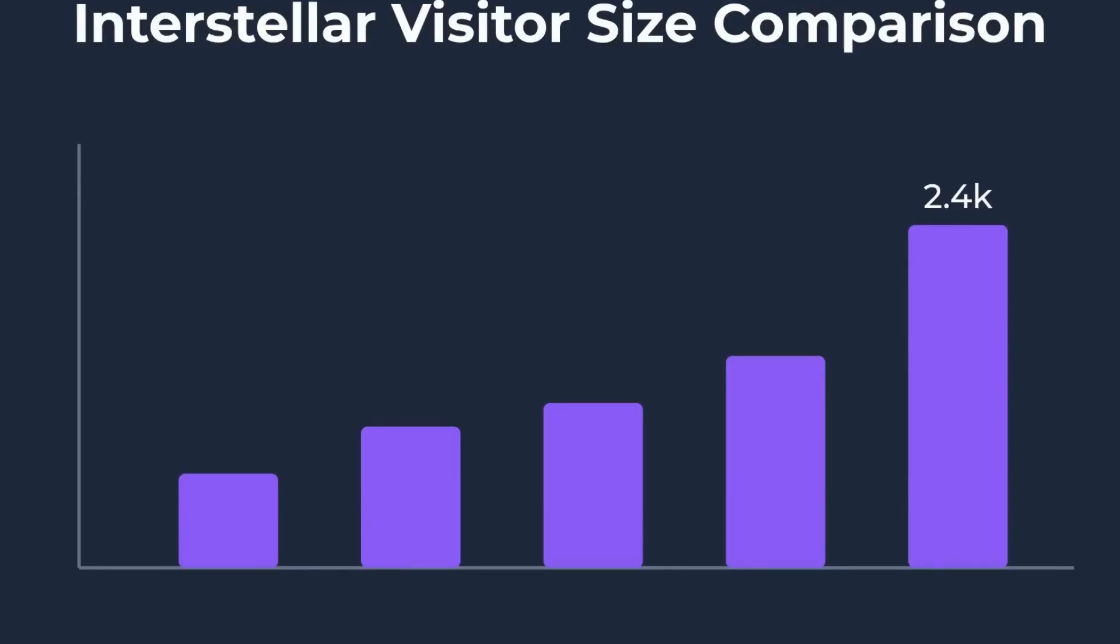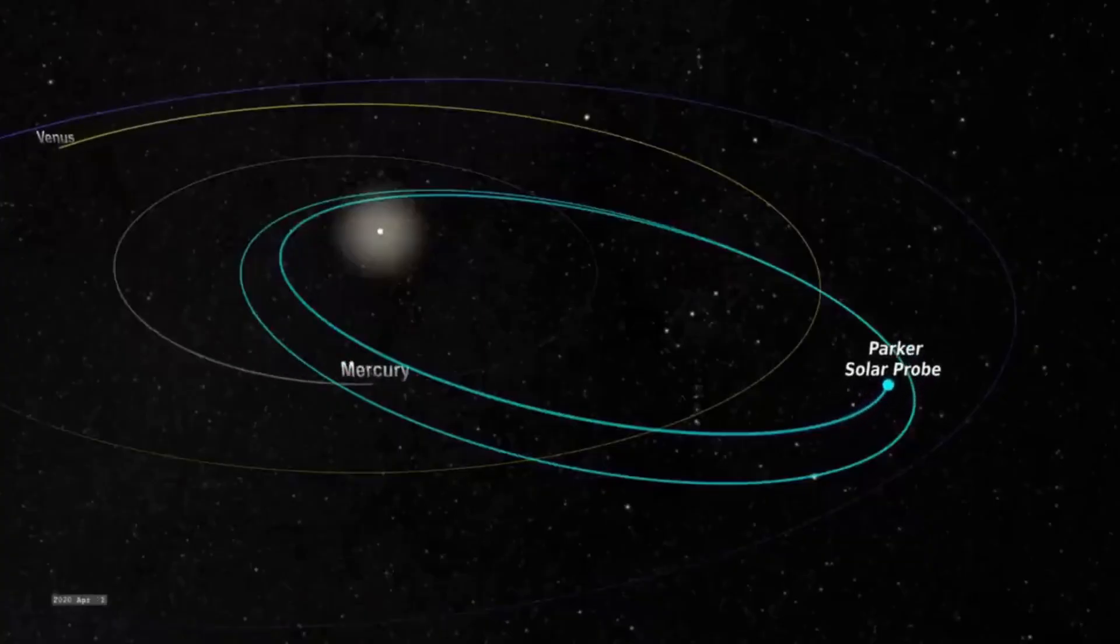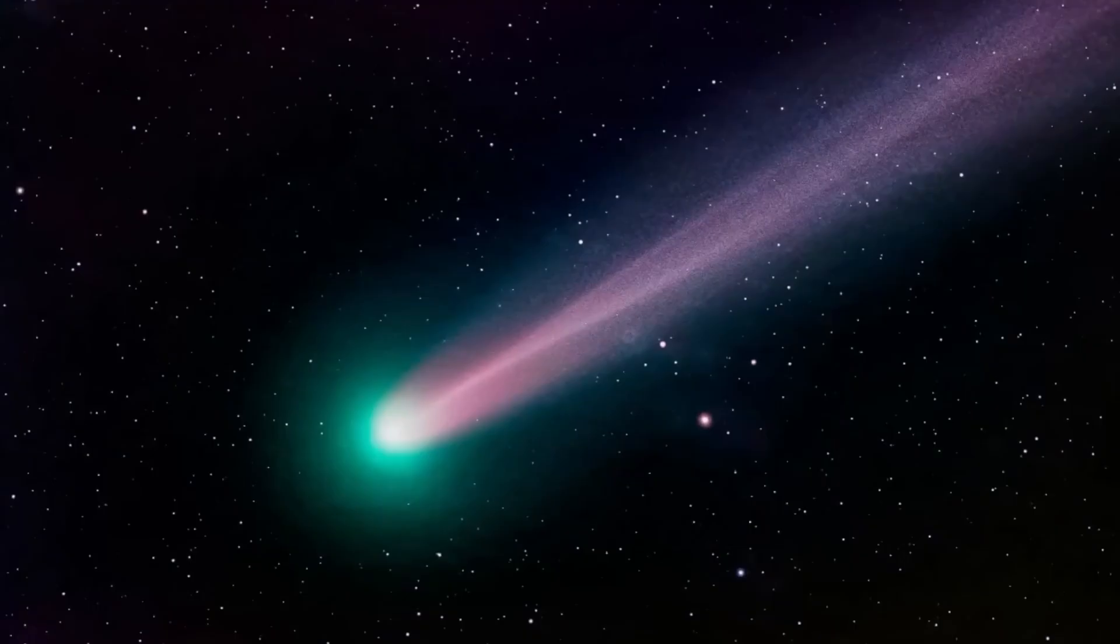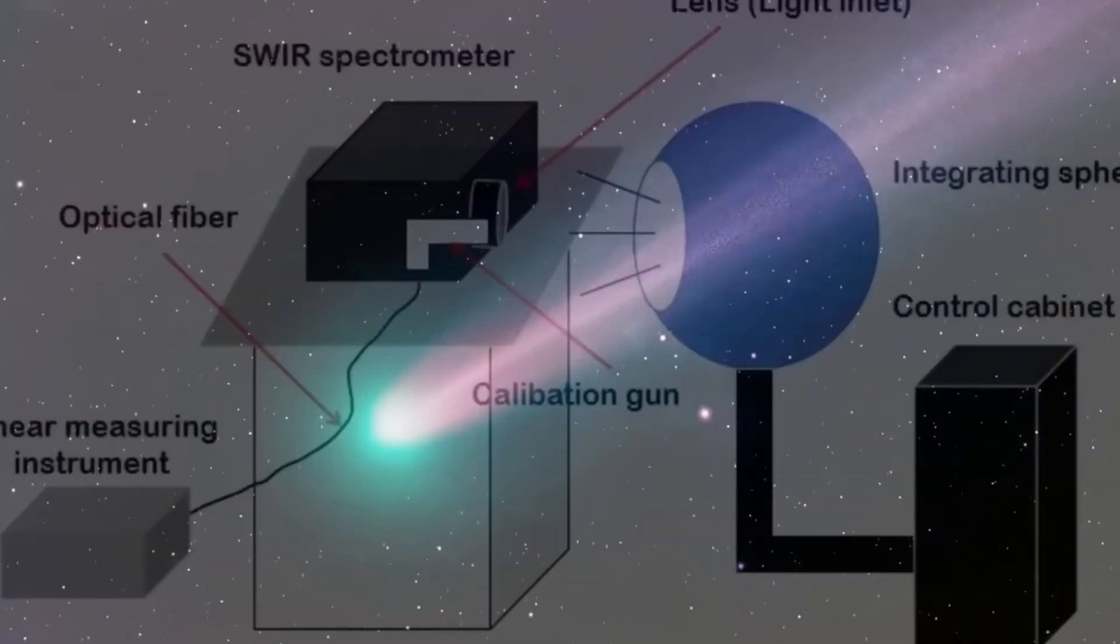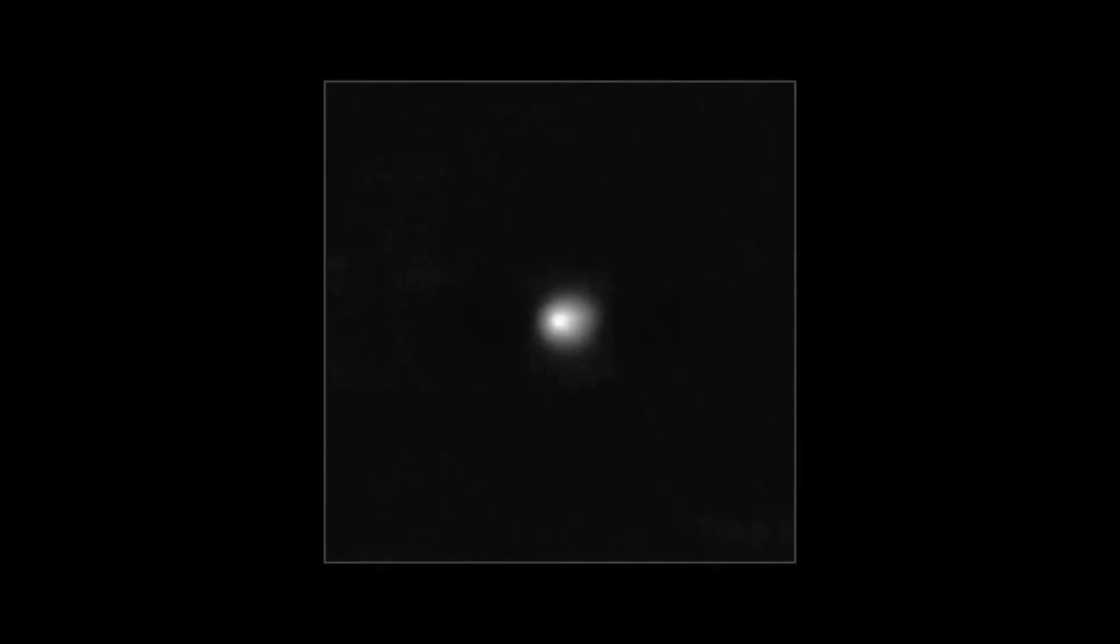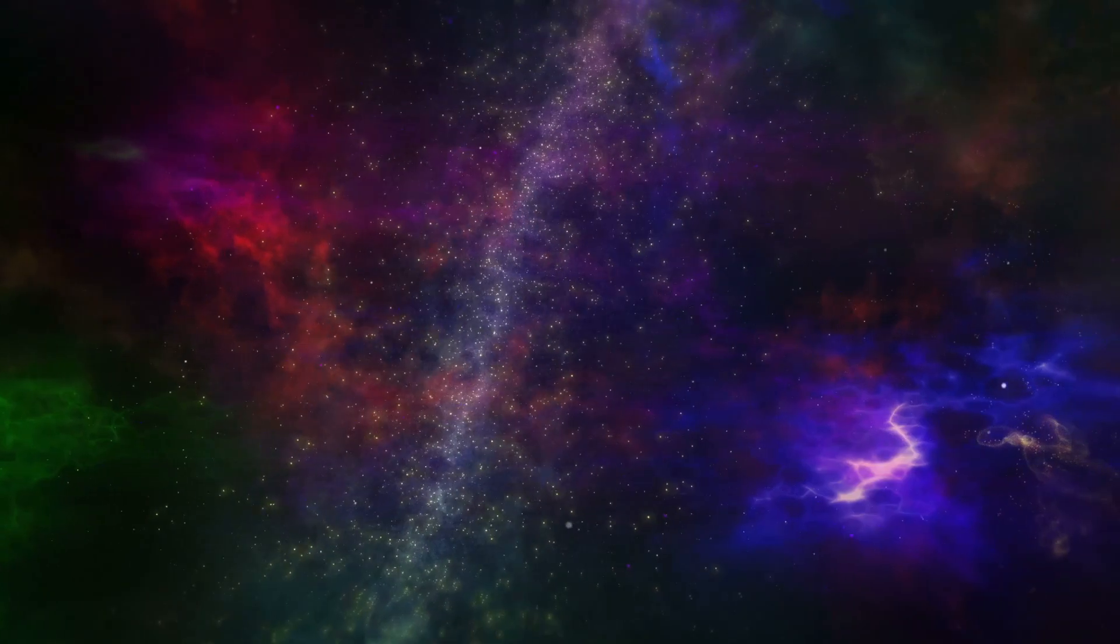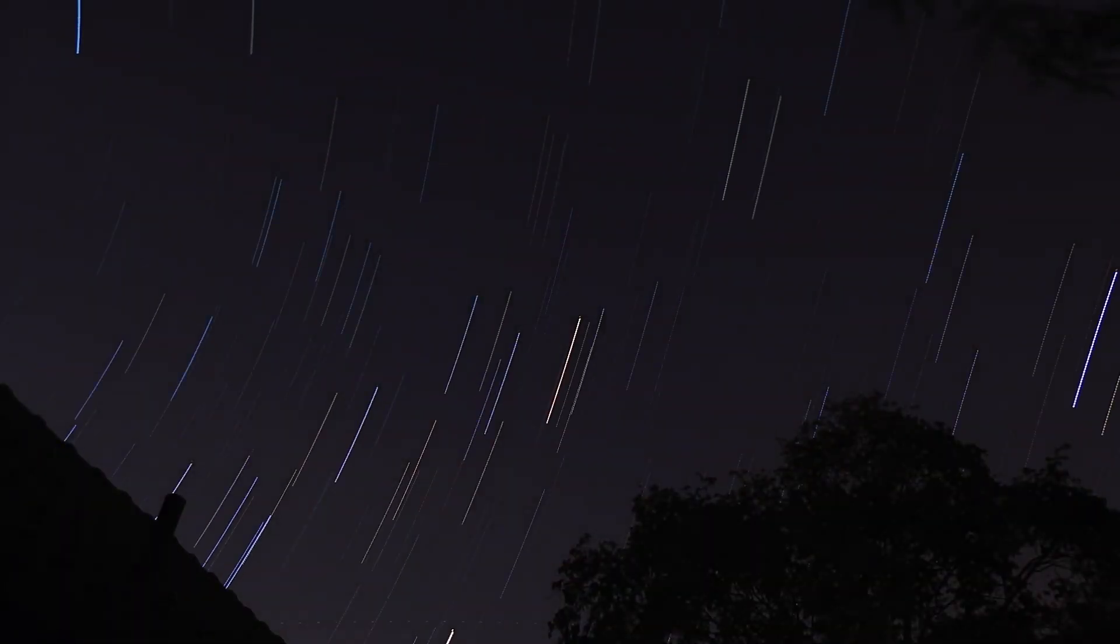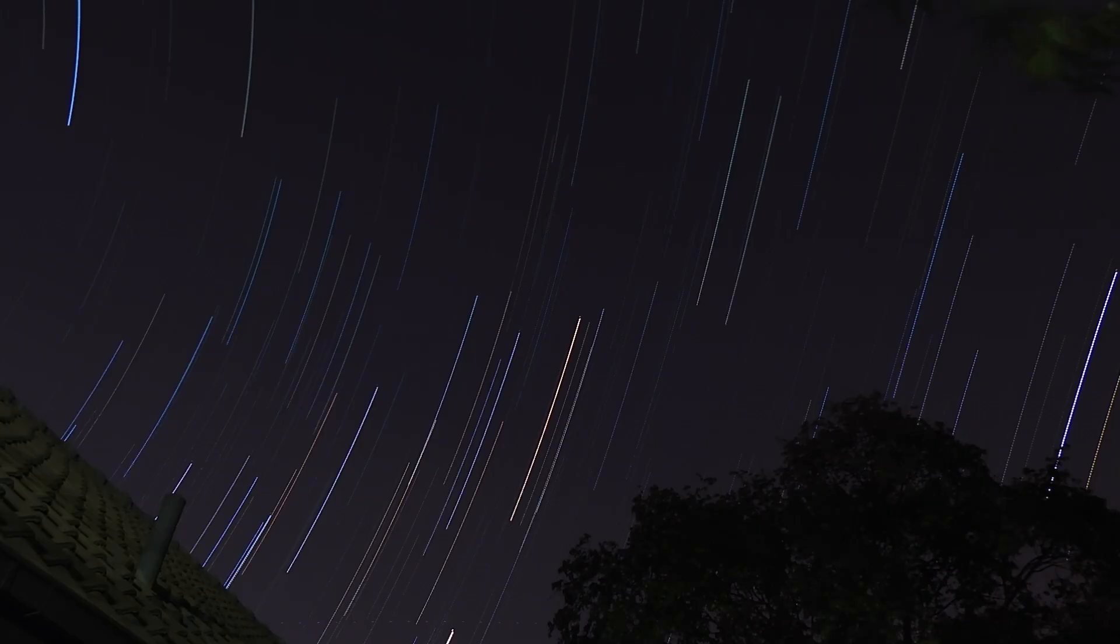Avi Loeb draws a chilling line from 3I Atlas back to 'Oumuamua. In 2017, 'Oumuamua's bizarre shape and strange acceleration sparked a firestorm of speculation. Now, less than a decade later, a visitor 20 times larger appears, threading a path of impossible precision. Loeb suggests this timing is not random, but a sequence: first a scout, then a more capable probe, each one testing for a response.